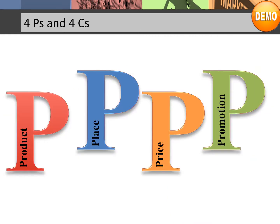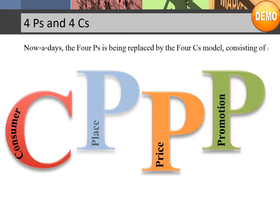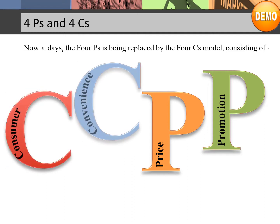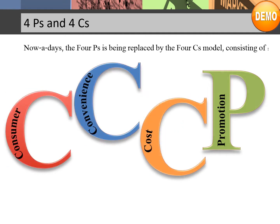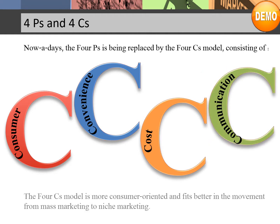4 P's and 4 C's. Nowadays, the 4 P's is being replaced by the 4 C's model, consisting of consumer, convenience, cost, and communication. The 4 C's model is more consumer-oriented and fits better in the movement from mass marketing to niche marketing.